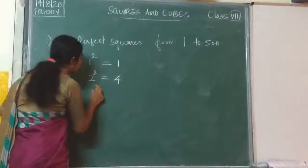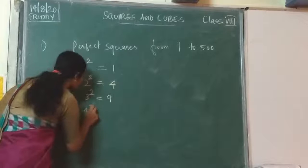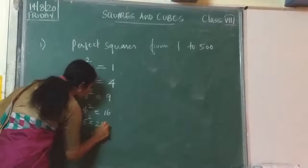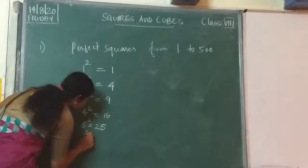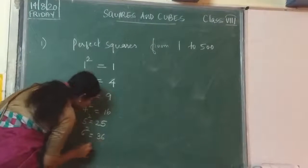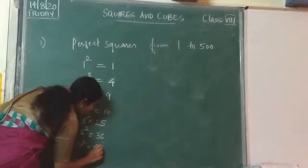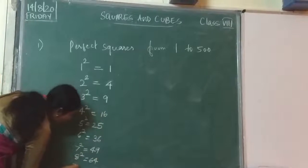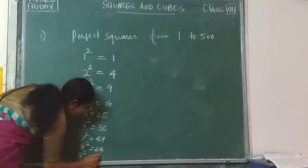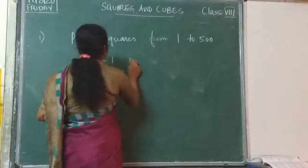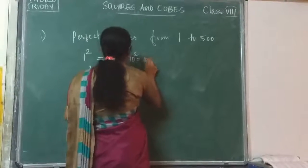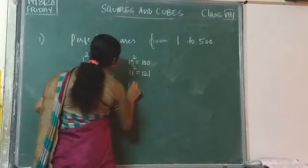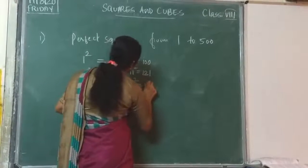So when you are ready, 3 squared is 9, 4 squared is 16, 5 squared is 25, 6 squared is 36, 7 squared is 49, 8 squared is 64, 9 squared is 81, 10 squared is 100, 11 squared is 121, and 12 squared is 144.